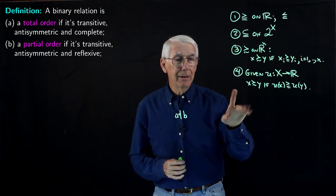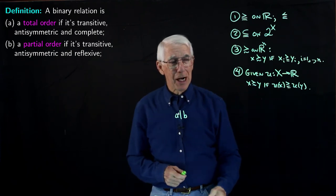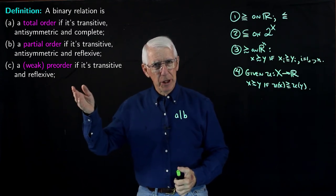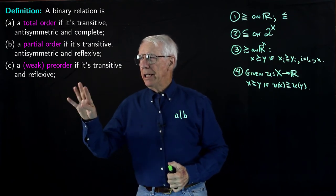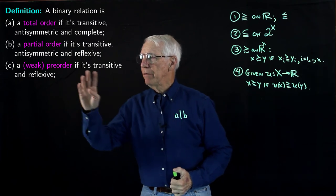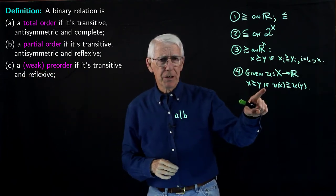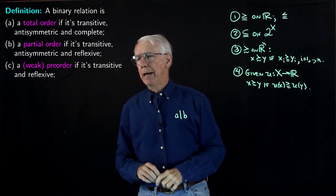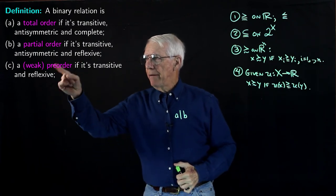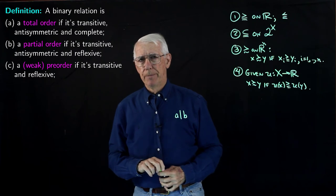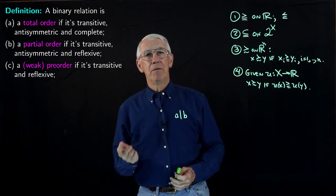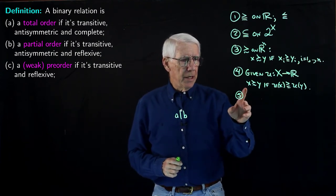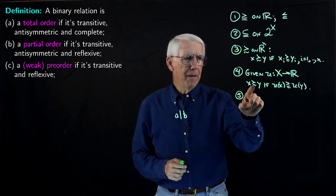So this relation is not one of those kinds of orders, but it is important. We elevate its properties to another definition — the definition of another kind of ordering. In particular, we generalize just the transitivity and reflexivity of the relation, not the completeness. This gives us what we call a weak preorder.